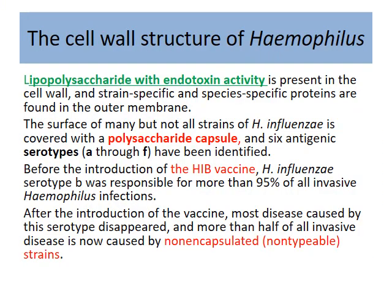Haemophilus has a polysaccharide capsule with many different antigens. Most importantly, the lipopolysaccharide has endotoxin activity. Most of the severe disease history associated with this gram-negative respiratory bacterium predates the HiB vaccine, when it had very high mortality. Now, with the vaccine introduced, most problems are controlled. However, since the vaccine targets the capsule, non-capsulated or non-typeable strains may still pose a problem as they don't express the relevant antigens on their surface.